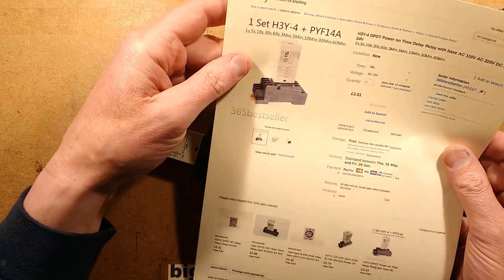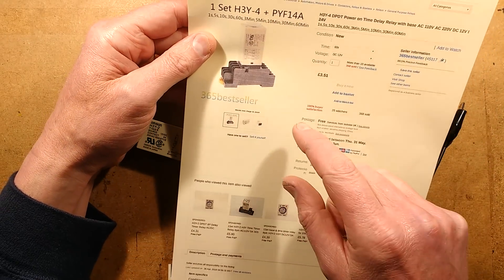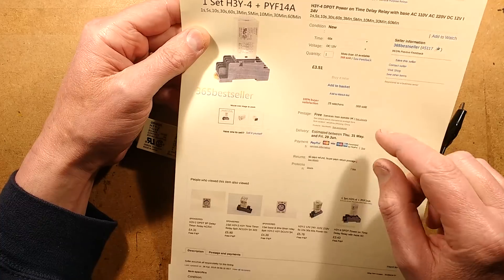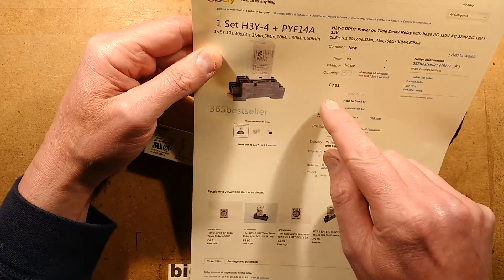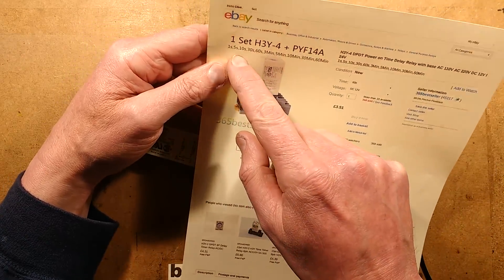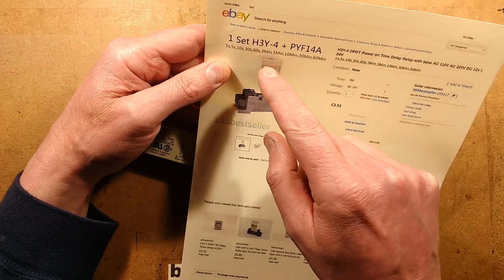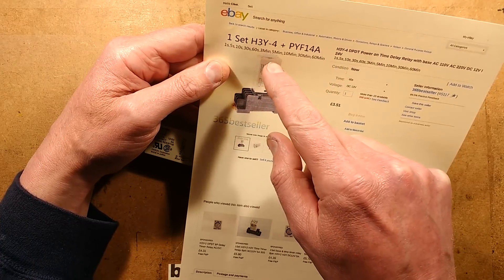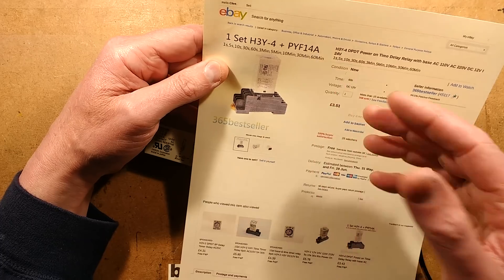This is a double pole. This particular listing is for four pole changeover and the cost is minuscule. It's £3.51 for one of these and you can get them in 1 second, 5, 10, 30, 60 seconds and 3 minute to 5, 10, 30 and 60 minute ranges.